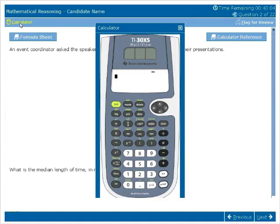To move the calculator, place the cursor in the top bar of the calculator, then click and drag the cursor to move the calculator around on the screen.